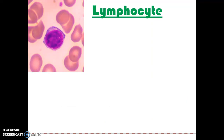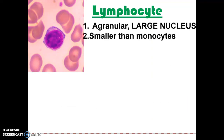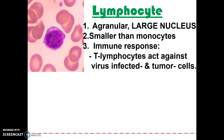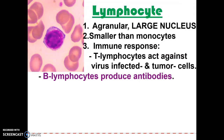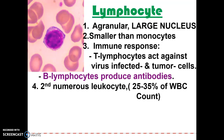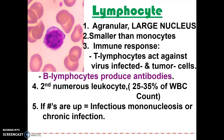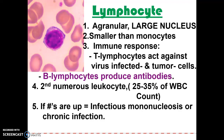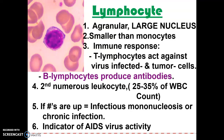Lymphocytes are small white blood cells that are mostly nucleus. They make all the antibodies. T lymphocytes physically attack things, while B lymphocytes produce antibodies. They are the second most numerous leukocyte, making up about 25 to 35 percent of your white blood cell count. If you have a lot of lymphocytes, you could have infectious mononucleosis — mono — a chronic infection, or it's also an indicator of AIDS virus activity.